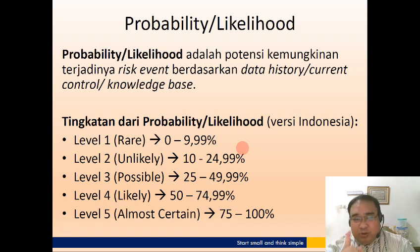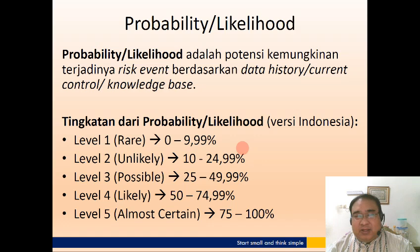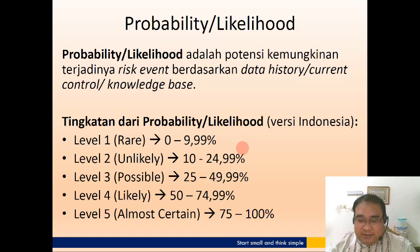Sebagai contoh, pada proyek konstruksi bangunan, resiko yang paling sering terjadi adalah mundurnya waktu penyelesaian. Mundurnya waktu penyelesaian itu masuk dalam level 4 atau likely. Sedangkan rendahnya kualitas itu masuk dalam level 3, yaitu possible.